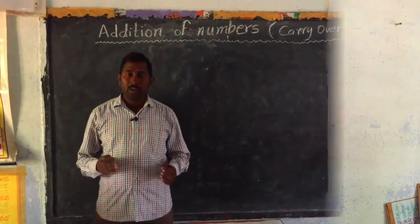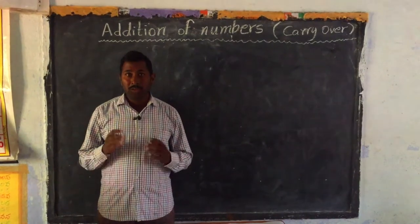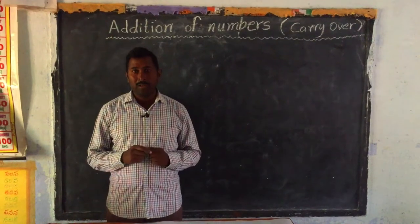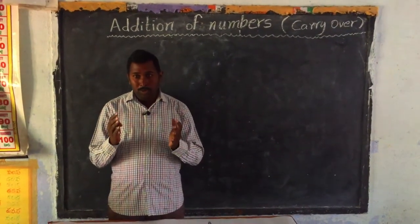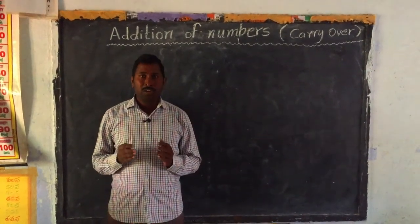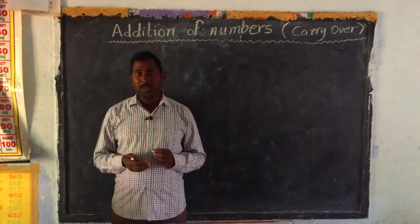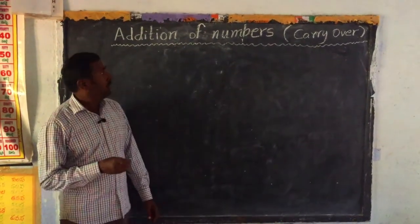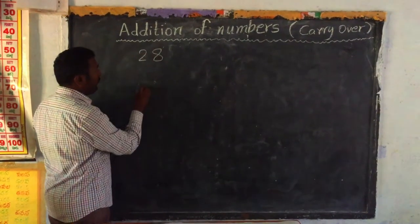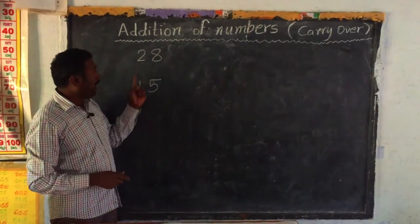In last exercises you did very well with additions. I think you are very proficient in doing addition, children. Are you well-versed in addition problems? Now, I will show another type of addition problem here. Here we have 28 and 15. We have to add 28 and 15.